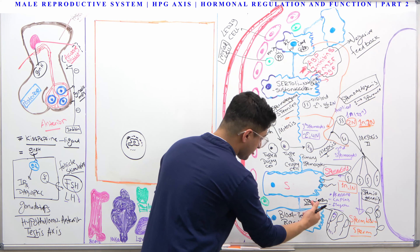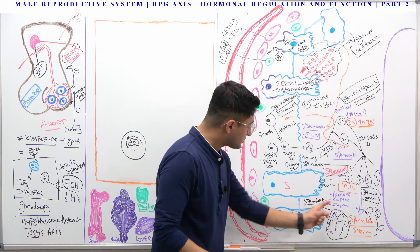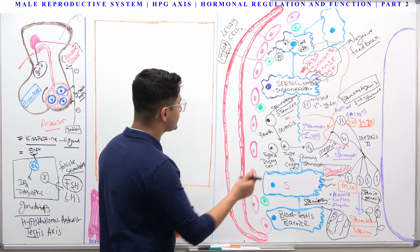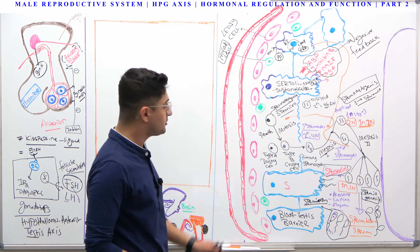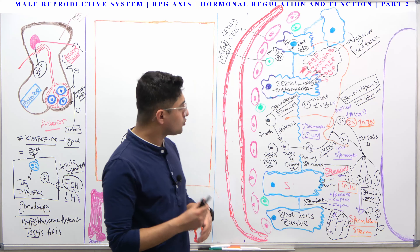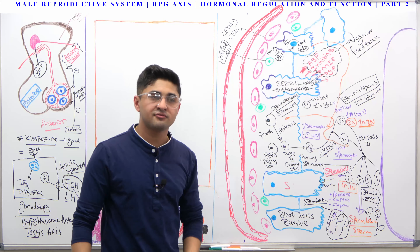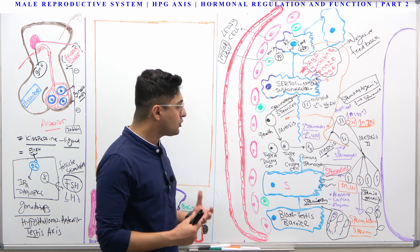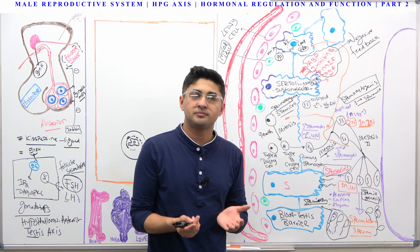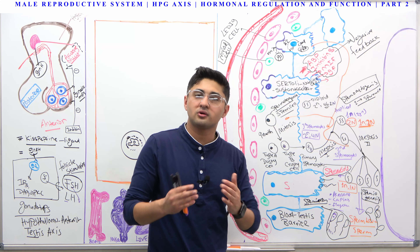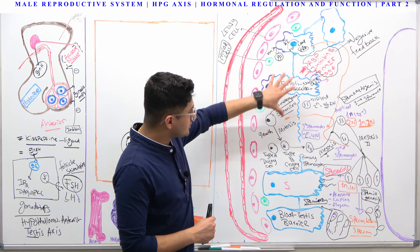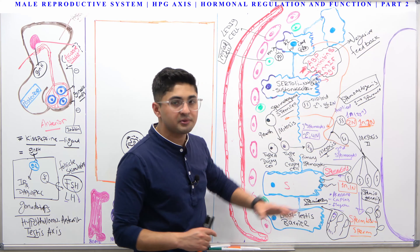The peristaltic contractions that move sperm through the tubules are performed by the myoid cells, which I talked about previously. Also, the Sertoli cells are very sensitive to temperature. In order to make sperm, the testes have to be at a relatively lower temperature than your body's core temperature — about two or three degrees less. That's why the scrotum also plays an important role in maintaining homeostasis so that sperm production is not disturbed.